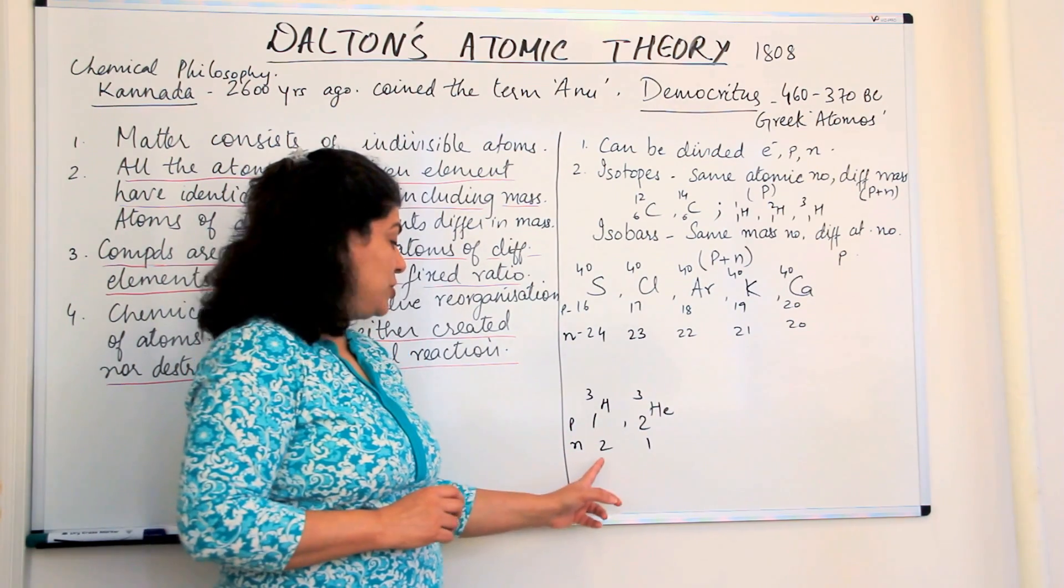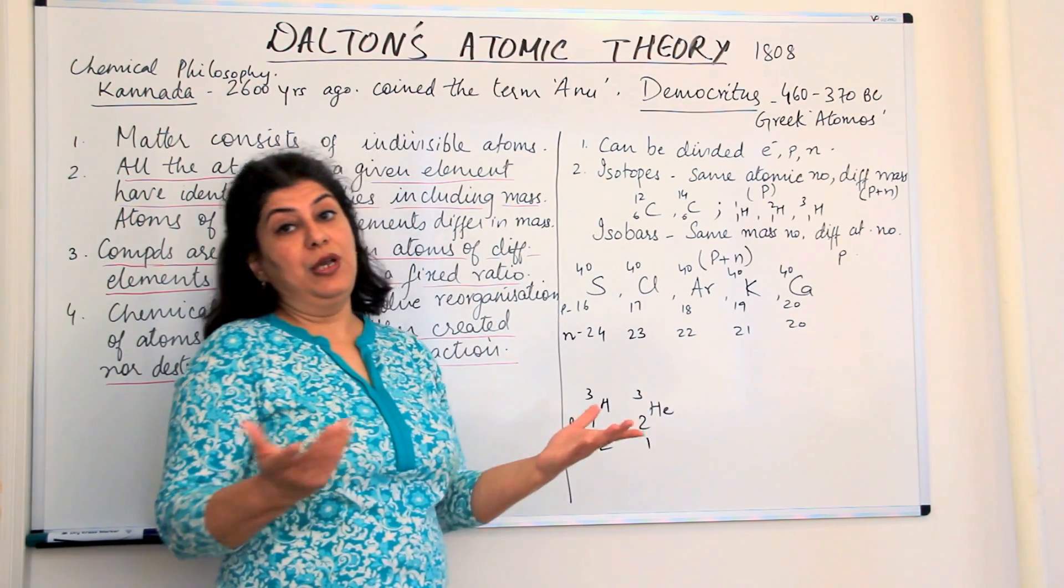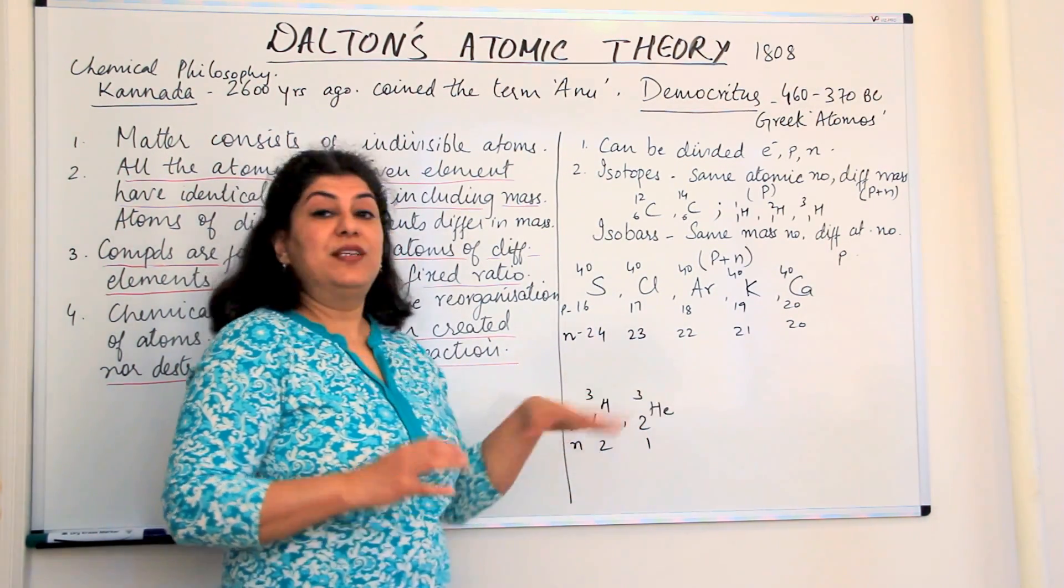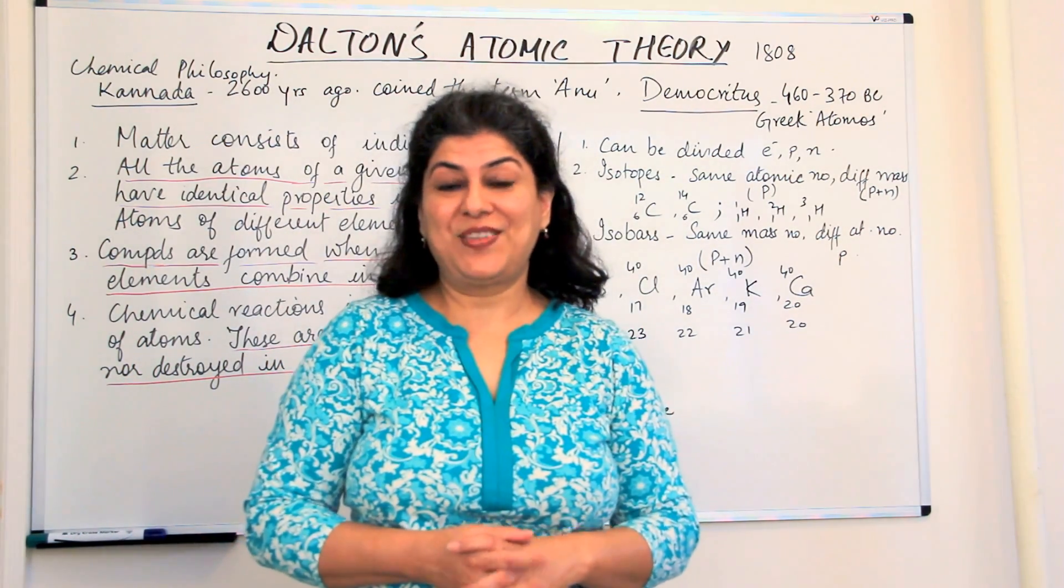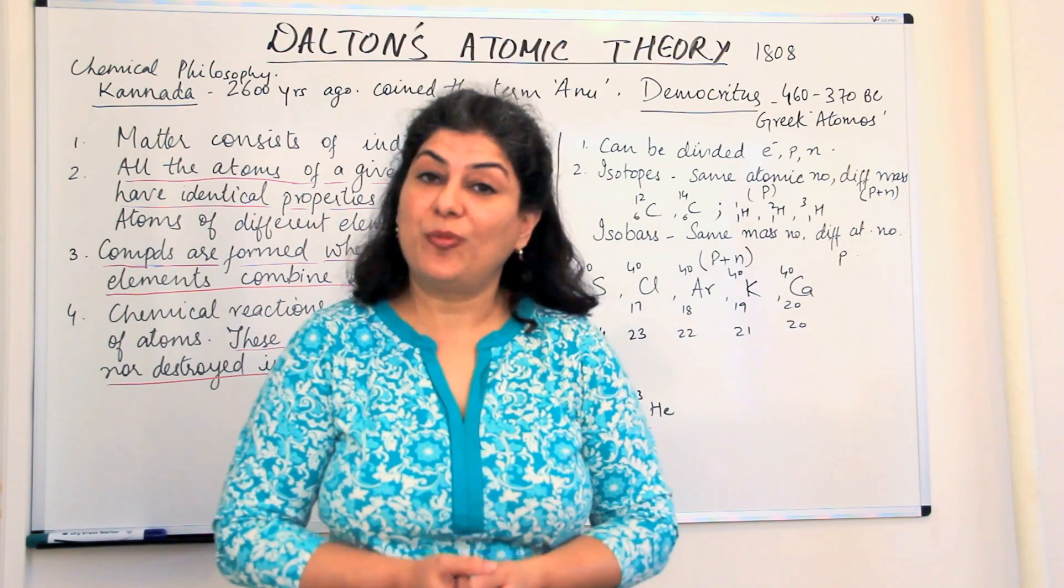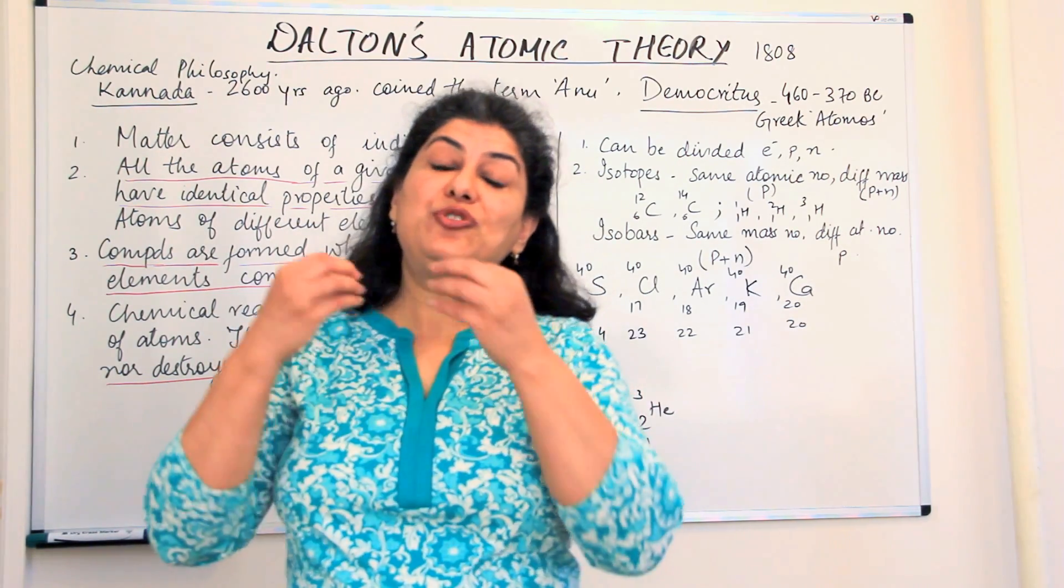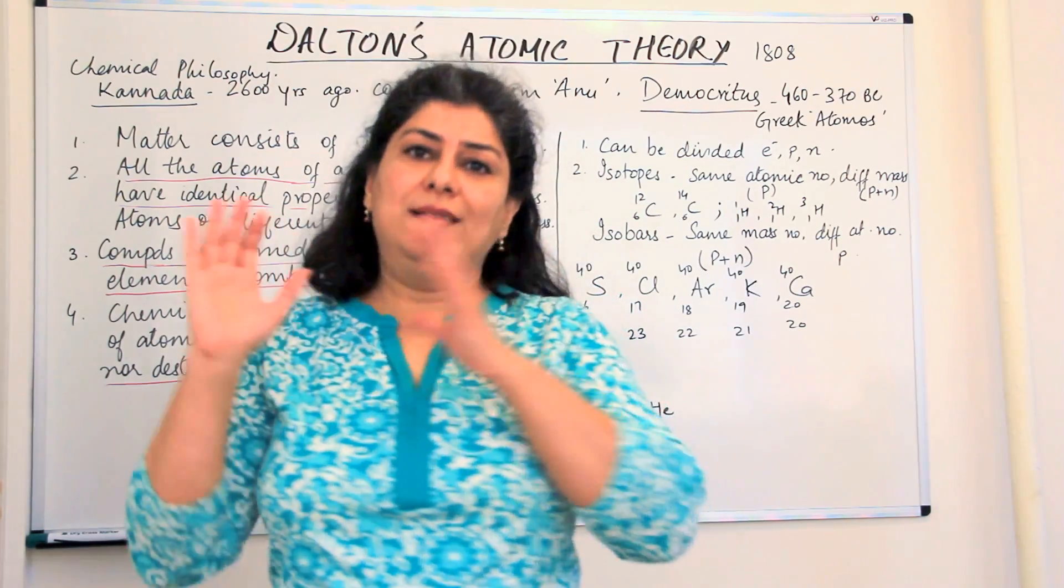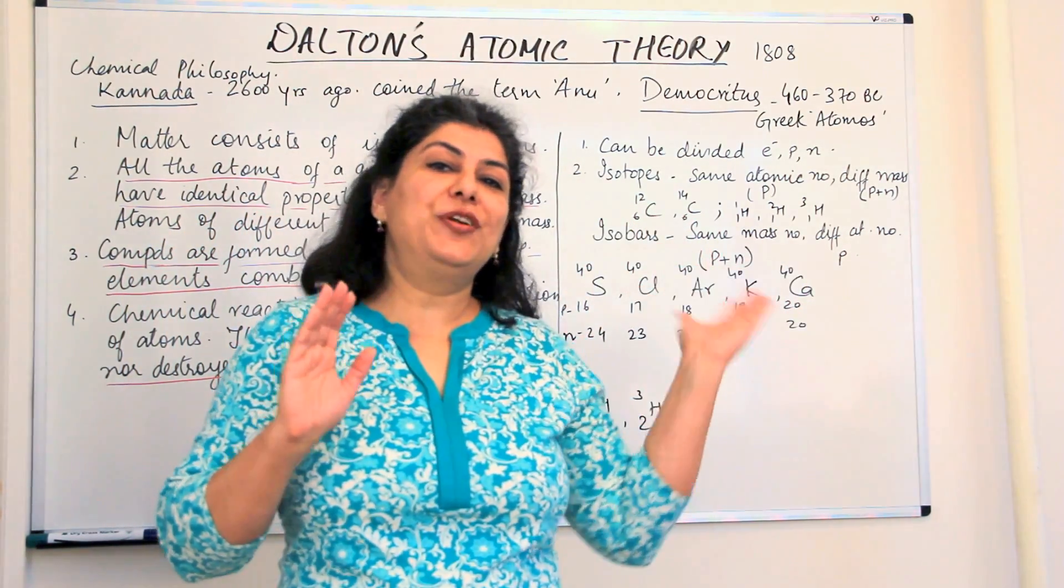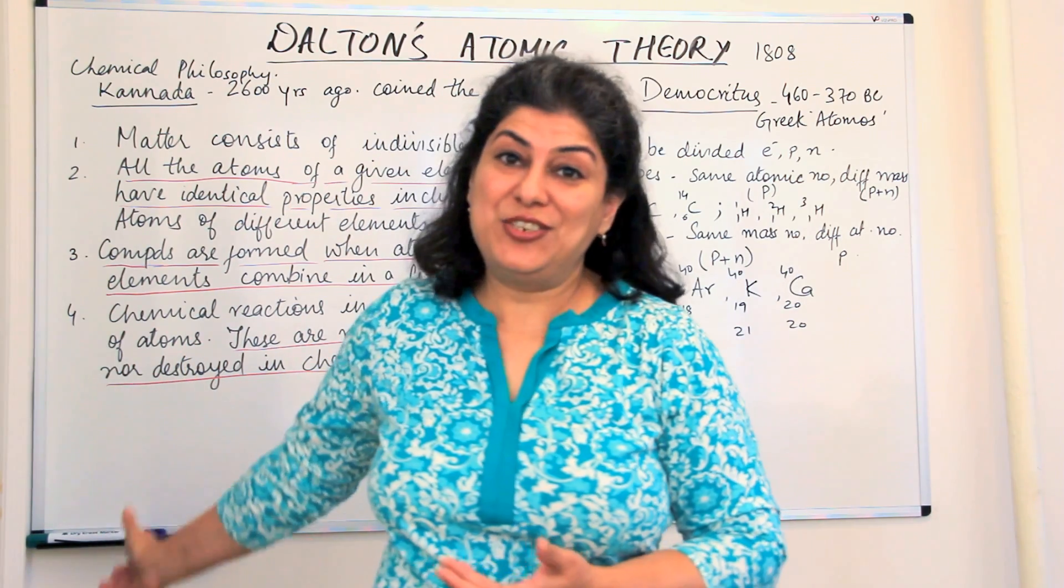But three mass numbers because they have two neutrons and one neutron, which makes them have the same mass. Such elements were known as isobars. So this was Dalton's atomic theory, how it can be used to explain the different laws of chemical combination, and how this theory was kind of wrong, partially wrong and partially correct too.